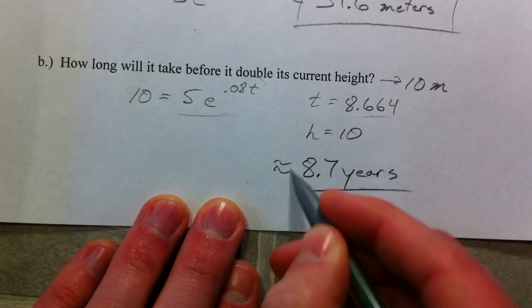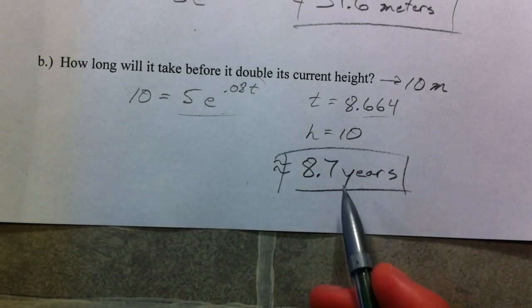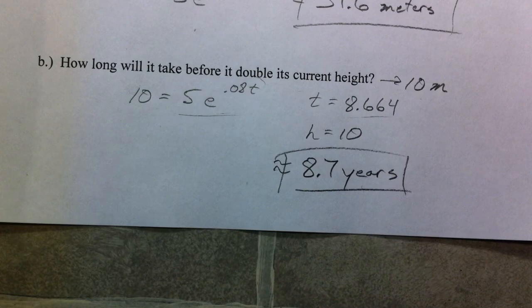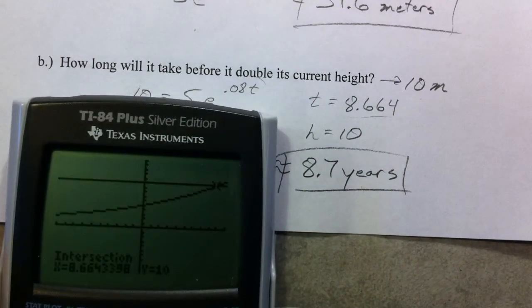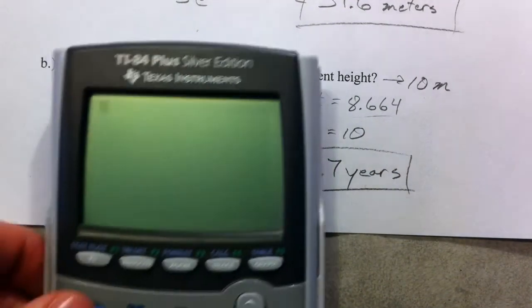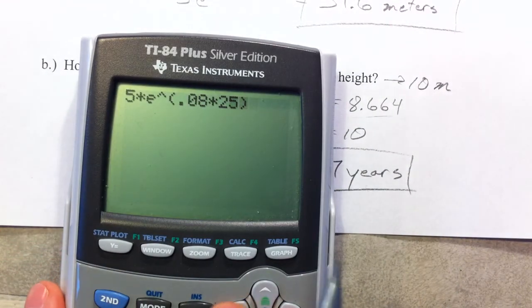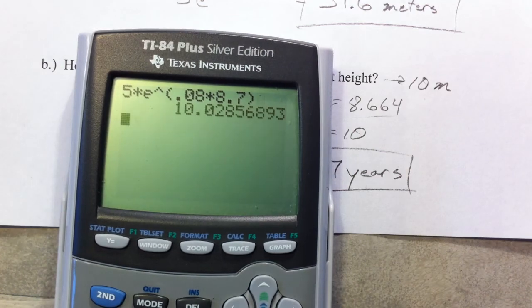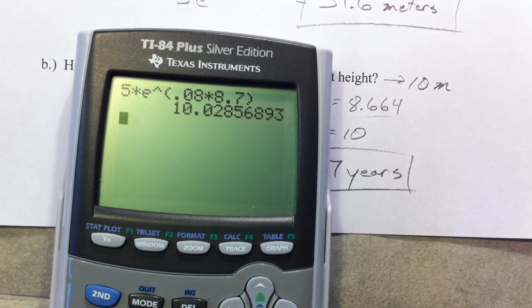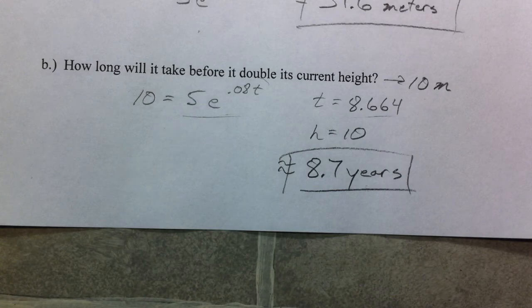So the height equals 10 when time is 8.664. How long will it take for it to double its current height? About 8.7 years. You can rest assured that if you round up, it will actually be double its height at 8.7. Going back and typing in 8.7 instead of 25 — sure enough, 10 meters. We'll play around with some more of these in class.